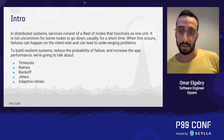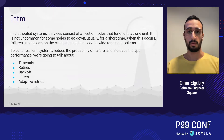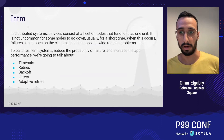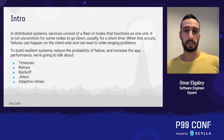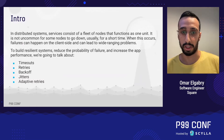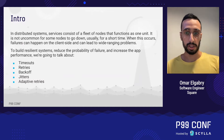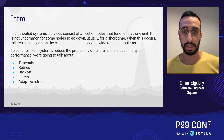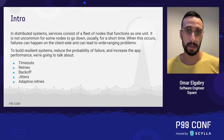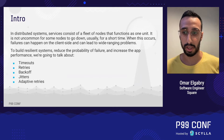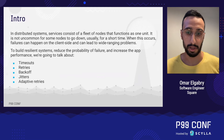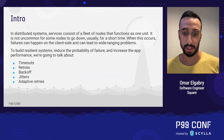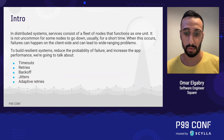In distributed systems, services consist of a fleet of nodes that function as one unit. It's not uncommon for some nodes to go down, usually for a short time. When this occurs, failures can happen on the client side and lead to wide-ranging problems. To build resilient systems, we're going to talk about timeouts, retries, backoff and jitter, and an adaptive mechanism to dynamically adjust request rates in response to higher error rates and unsuccessful retry attempts.